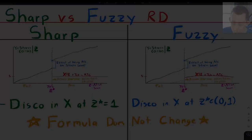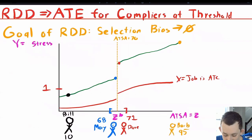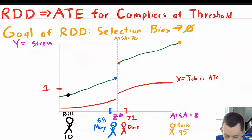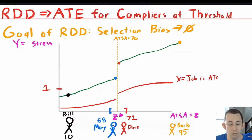Now let's talk about why an RD estimate is a local average treatment effect for compliers at the threshold. I've taken a fuzzy RD graph and added some people. The reason we do an RD is to get a random experiment out of something that isn't inherently random — we want selection bias to go to zero. We don't want our estimate to capture the fact that people who just barely pass the ATSA are fundamentally different for other reasons from people who just barely fail.